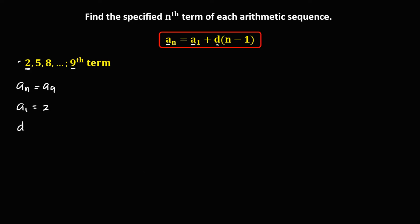Then for d, the common difference — the distance between these two numbers — so from 2 to 5, that's 3, and from 5 to 8, that's also 3. So therefore, the common difference is positive 3. Then for n, since a sub n is equal to a sub 9, so n is equal to 9.